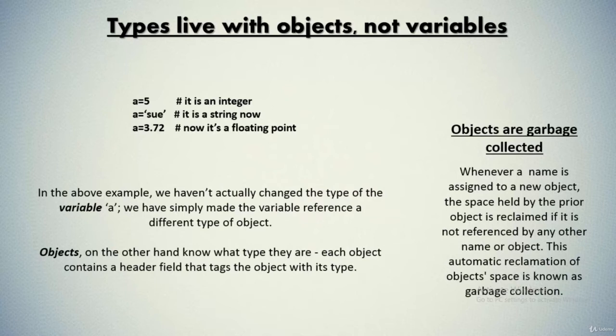Objects know what type they are. Each object contains a header field that tags the object with its type. Now, objects are garbage collected. Whenever a name is assigned to a new object, the space held by the prior object is reclaimed if it is not referenced by any other object or name. This automatic reclamation of object space is known as garbage collection.